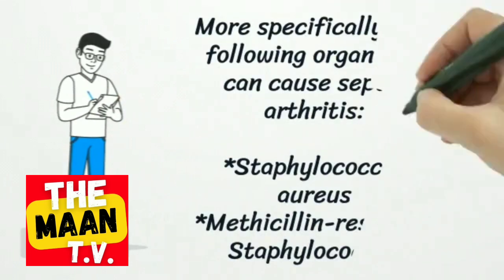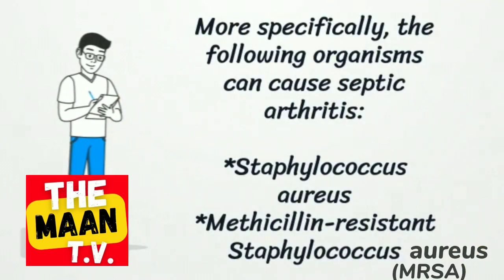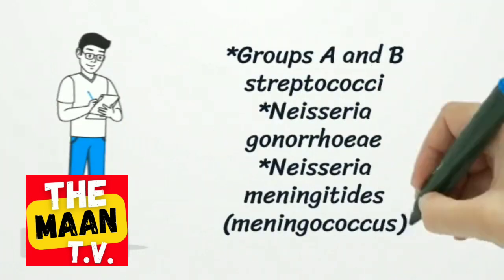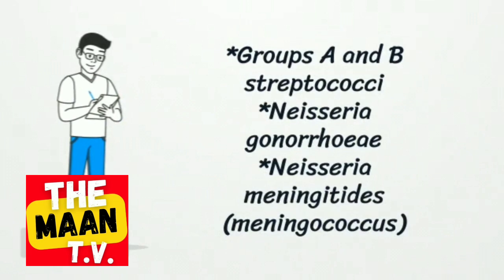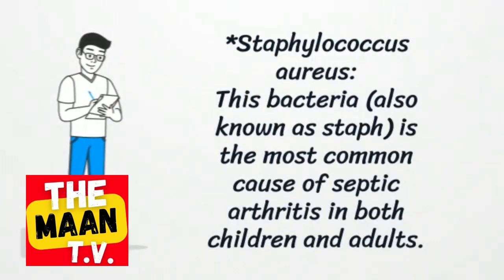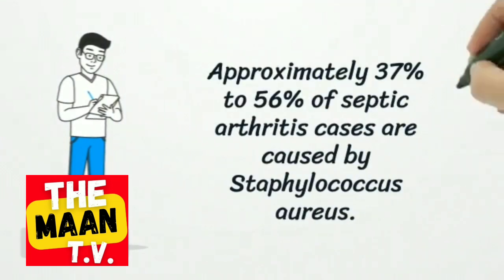More specifically, the following organisms can cause septic arthritis: Staphylococcus aureus and methicillin-resistant Staphylococcus aureus (MRSA). Staphylococcus aureus, a type of bacteria, is the most common cause of septic arthritis in both children and adults, responsible for approximately 37% to 56% of cases.